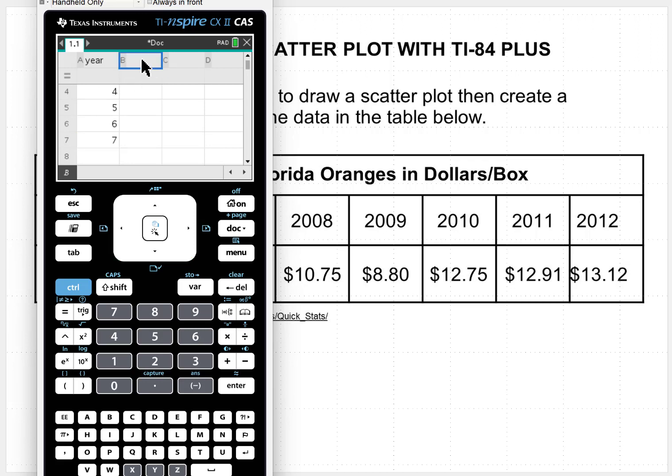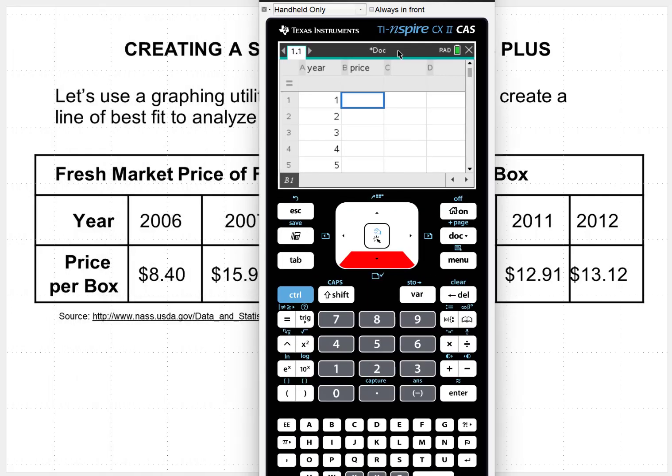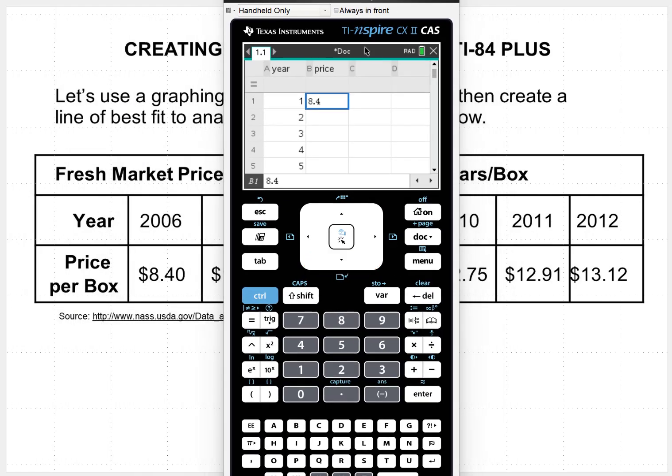I'm going to put 1 through 7 in our year column. So 1 2 3 4 5 6 7. That's going to represent all the way up to 2012. And then in the y column we're going to name the y column as price. And we'll start out with that first amount as $8.40. So we have $8.40 in the first year. $15.99 in year 2. $10.75 in 2008. $8.80 in 2009. $12.75, $12.91 and $13.12 for our last amount.